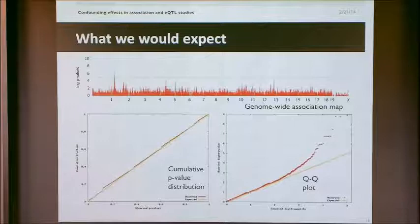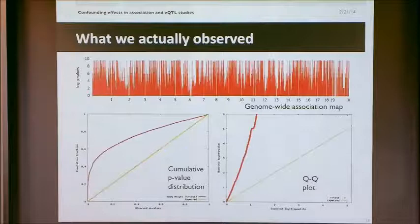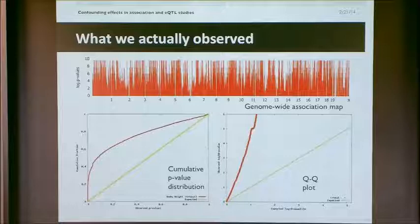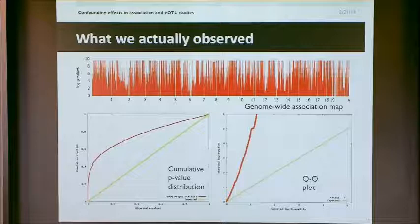Of course, what we actually saw was that virtually every locus, every position of the genome had huge associations with body weight. We were very excited at first — we even had this crazy idea that we were going to engineer the world's largest mouse. But then we talked to some people and they pointed out that we should run QQ plots, and this is what our QQ plots looked like. Anyone who's done a human GWAS would know that looks pretty funny.